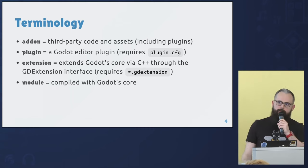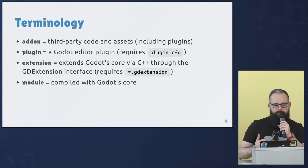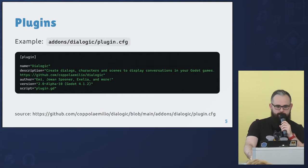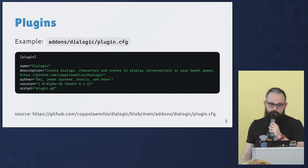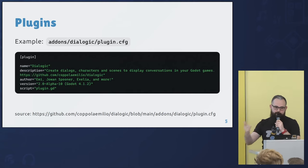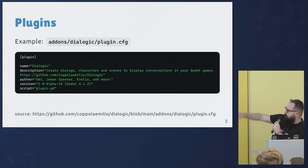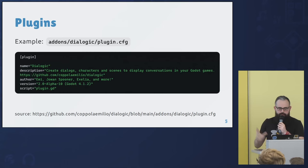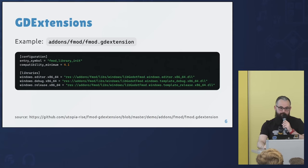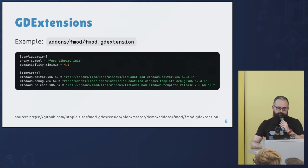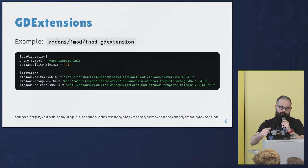There's also the concept of GDExtensions, brought by Godot 4, which is the successor to GDNative. And there are modules, which are basically compiled with the Godot core. A plug-in looks like a config file — this is a snippet from the Dialogic plug-in config — and Godot reads this to load the plug-in, using a GDScript entry point. GDExtensions are not an alternative to plug-ins but work in combination, serving as an interface to native C++ code that you can then access via the plug-in code.